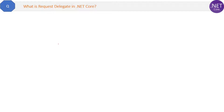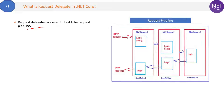What is a request delegate in .NET Core? Request delegates are used to build the request pipeline. As you can see in the diagram, an HTTP request comes in and inside the configure method it visits middleware one, two, and three, and then responds back to the client. This is the request pipeline.